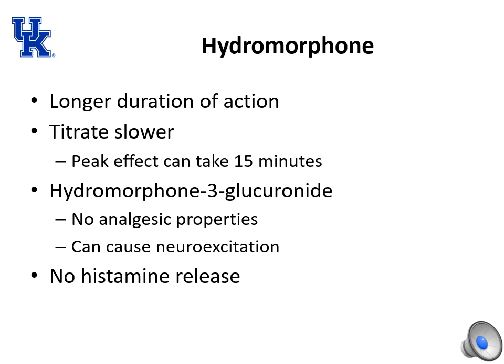Hydromorphone, also called dilaudid, has a longer duration of action. Titrate this opioid slowly because its peak effect can take 15 minutes. Like morphine and mepiridine, it has a metabolite — hydromorphone 3-glucuronide — which has no analgesic properties but can cause neuroexcitation. It causes no histamine release.